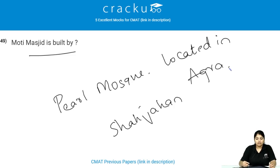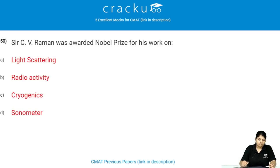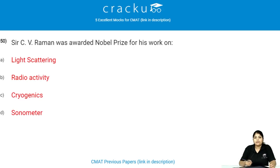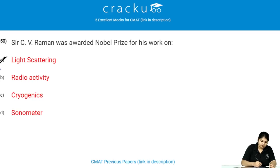Sir C.V. Raman was awarded the Nobel Prize for his work on what? He was awarded the Nobel Prize for his work on light scattering, which is called the Raman Effect.